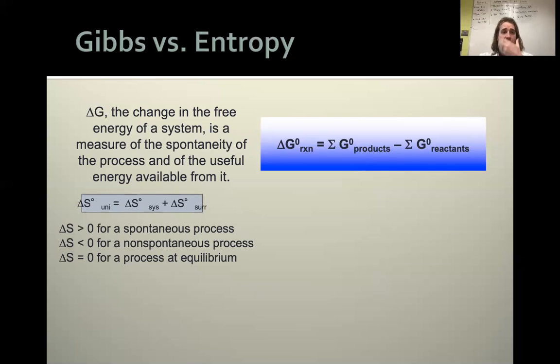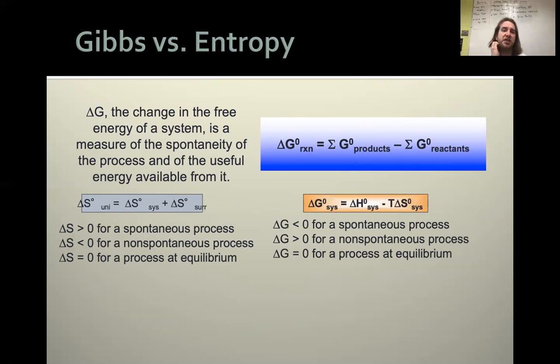All of our other factors or all of our other spontaneous indicators still apply. So if your change in entropy is positive, that's spontaneous. If it's negative, it's non-spontaneous, that's for the change in entropy, because we're always moving to more disorder. If you don't have any change in your entropy, there's no longer any measurable change in entropy occurring, that's because you're at equilibrium. It flips for our delta G. Delta G is less than zero or negative.